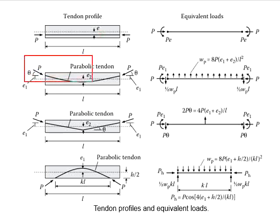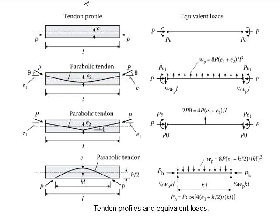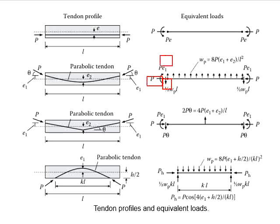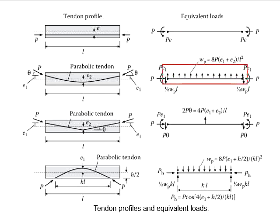The second arrangement is the parabolic tendon profile, where you have negative eccentricity at the end and positive eccentricity at the midspan. Because of the inclined forces, if you resolve them into component forces, there will be a vertical force and a horizontal force. This vertical force and horizontal force act on the member, and due to the continuous change of the gradient of the tendon, it will generate a certain degree of UDL.